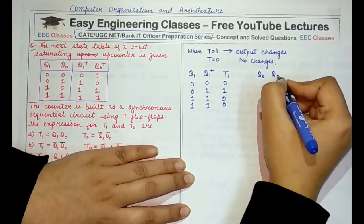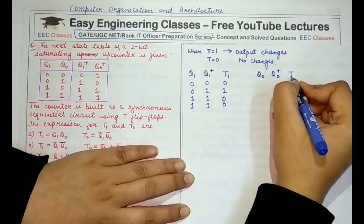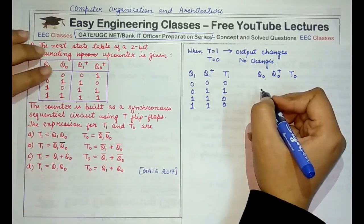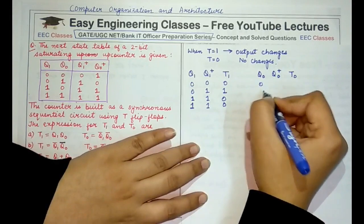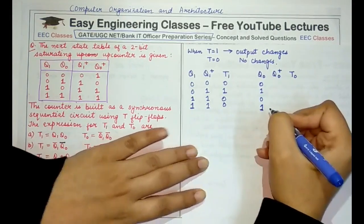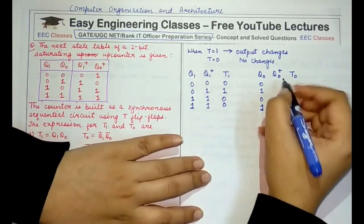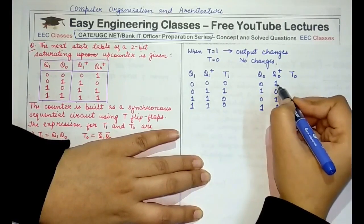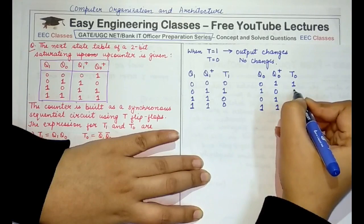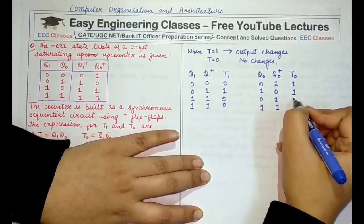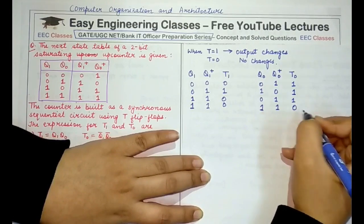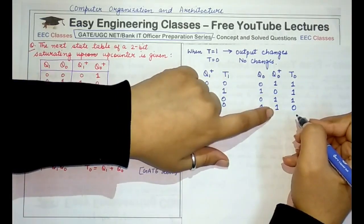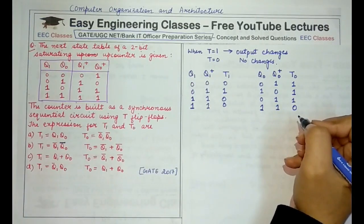Now doing the same for Q0: the current state is 0, 1, 0, 1 and the next state is 1, 0, 1, 1. Since there is a change in the first row, T0 is 1; again a change in the second row, T0 is 1; again a change in the third row, T0 is 1; but in the last case there is no change, so T0 is 0.